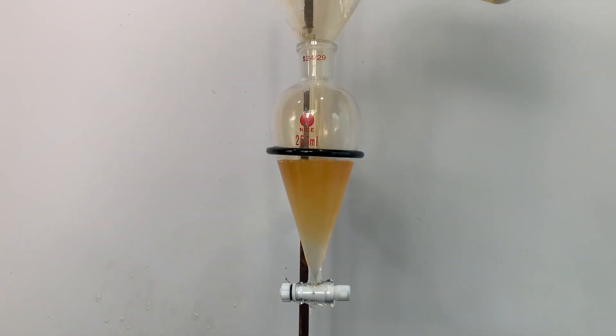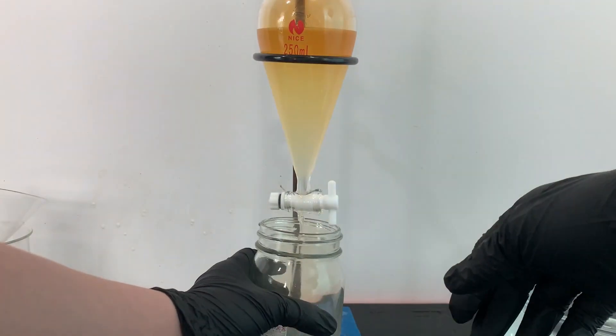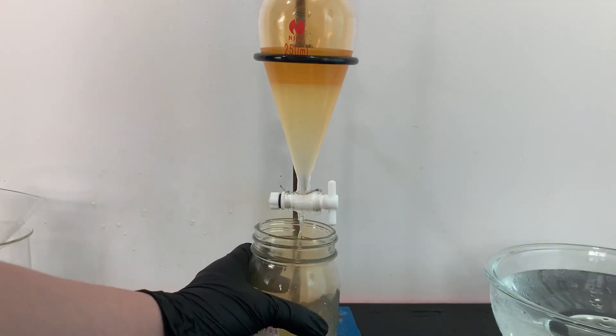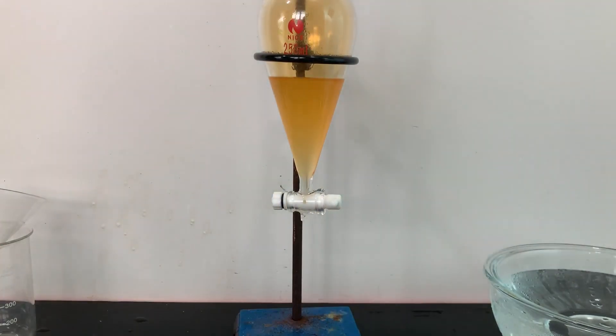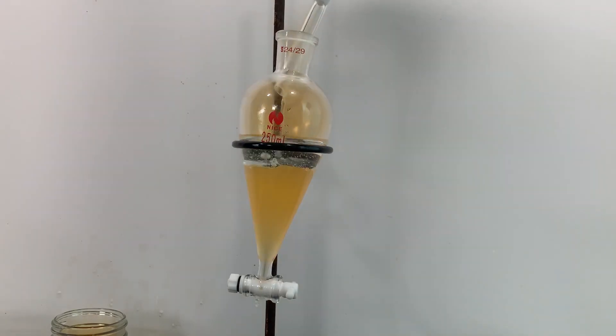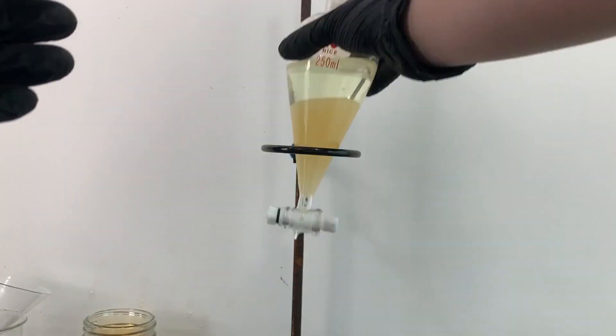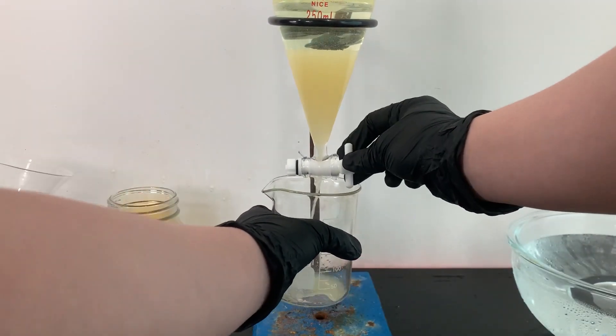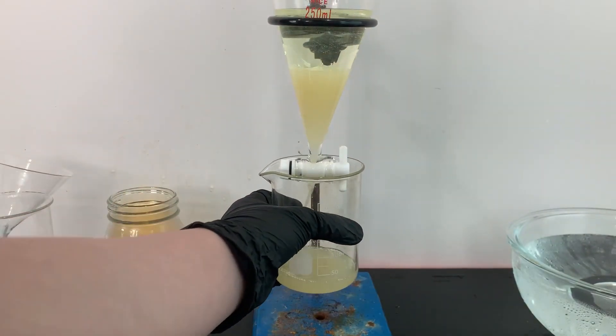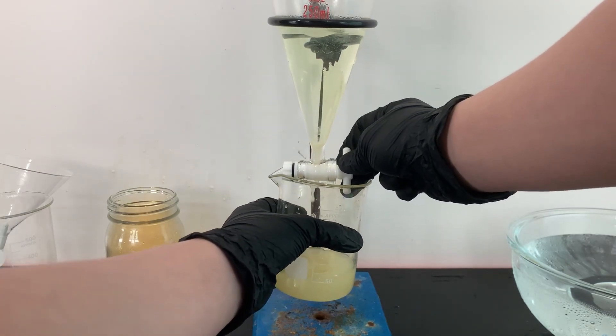The contents are transferred to a separatory funnel and the bottom layer is drained. The nitrobenzene was then washed with water. The funnel was shaken and vented. The bottom nitrobenzene layer was then drained into a beaker. The nitrobenzene was washed like this for 3 times.